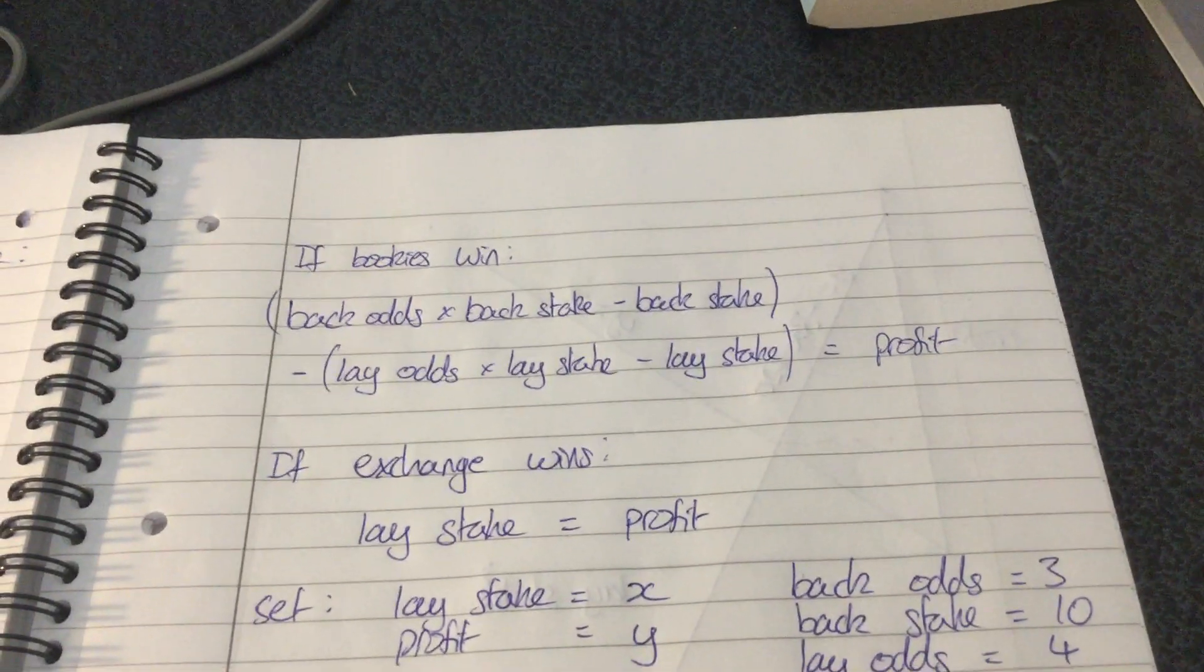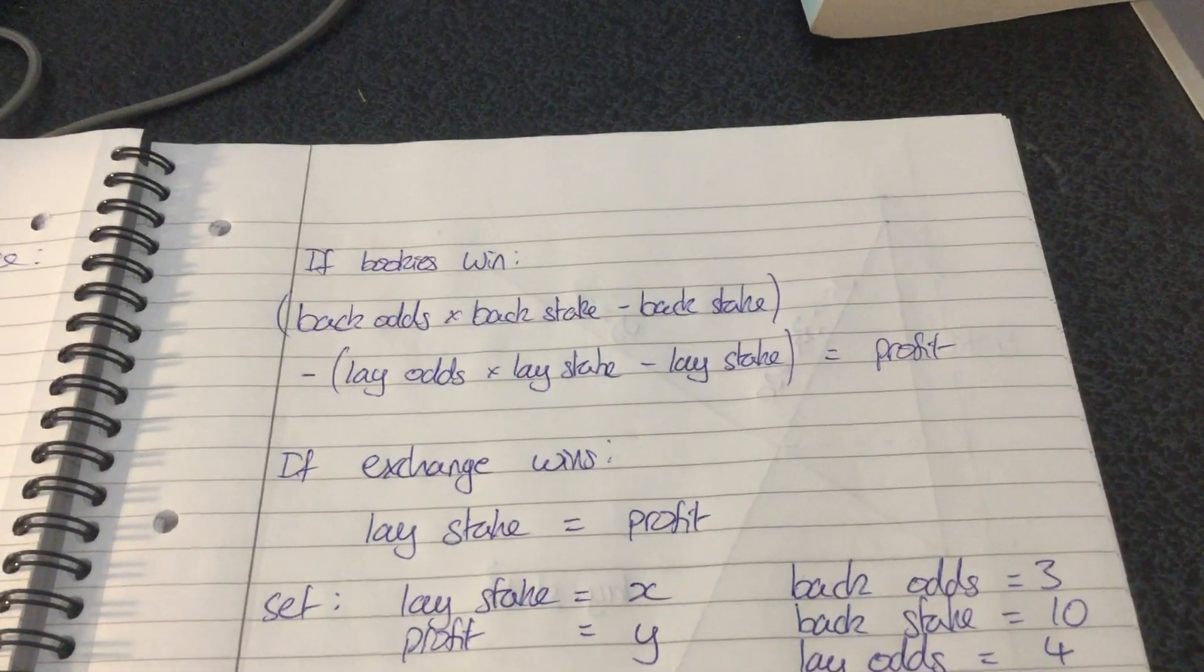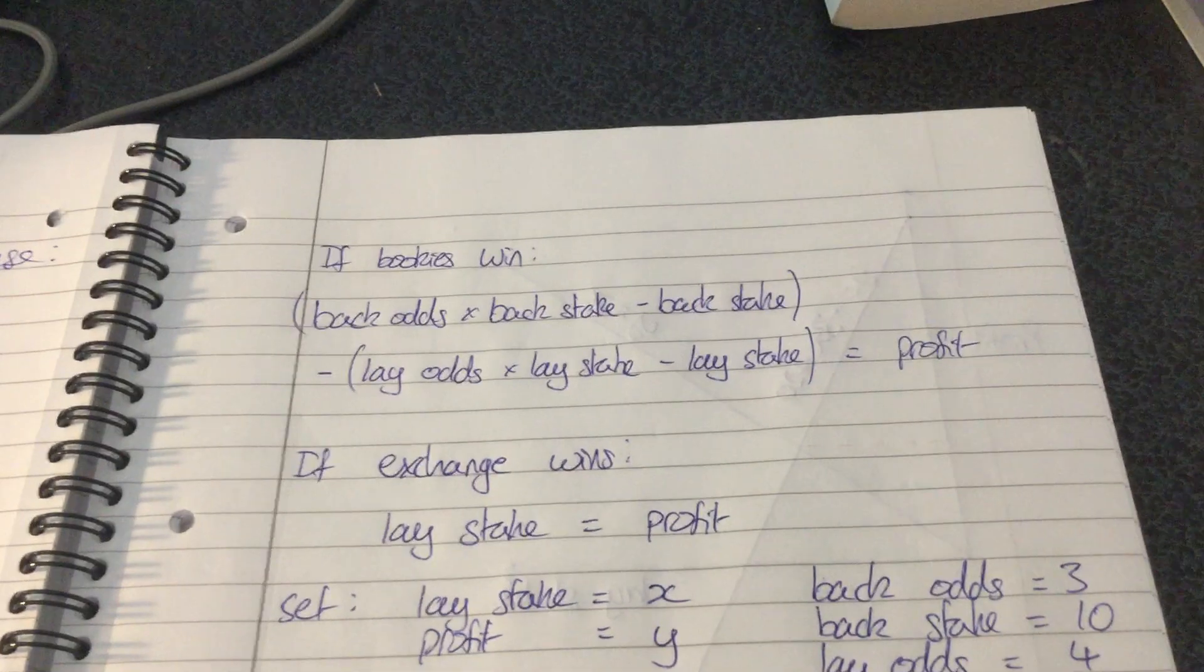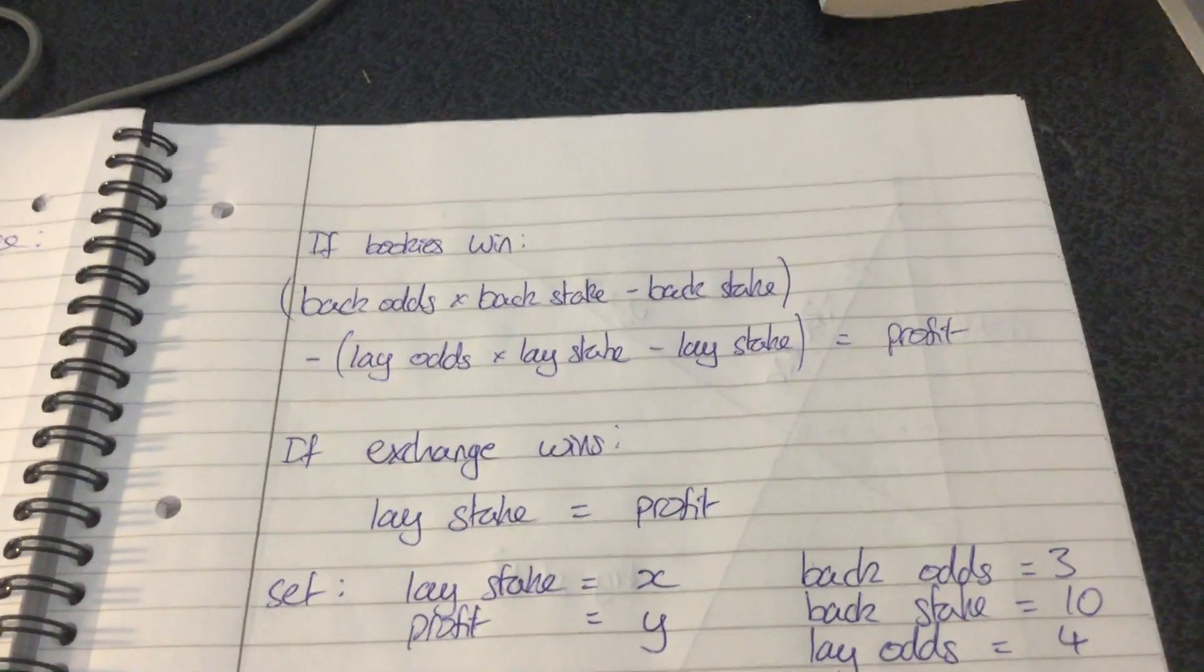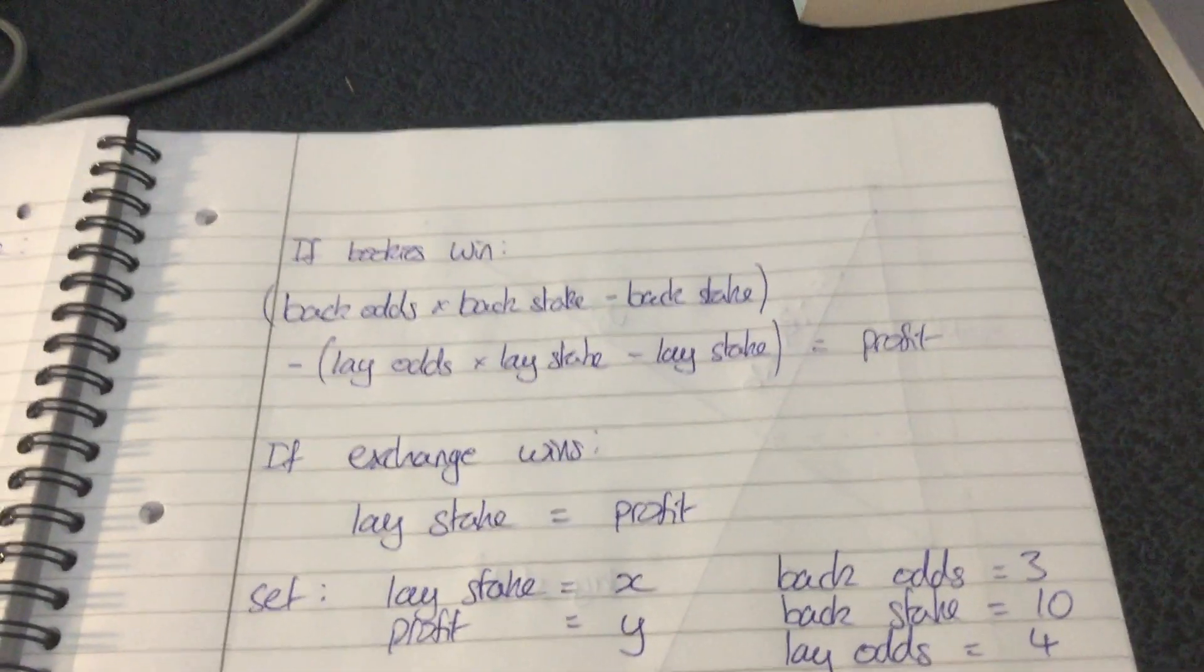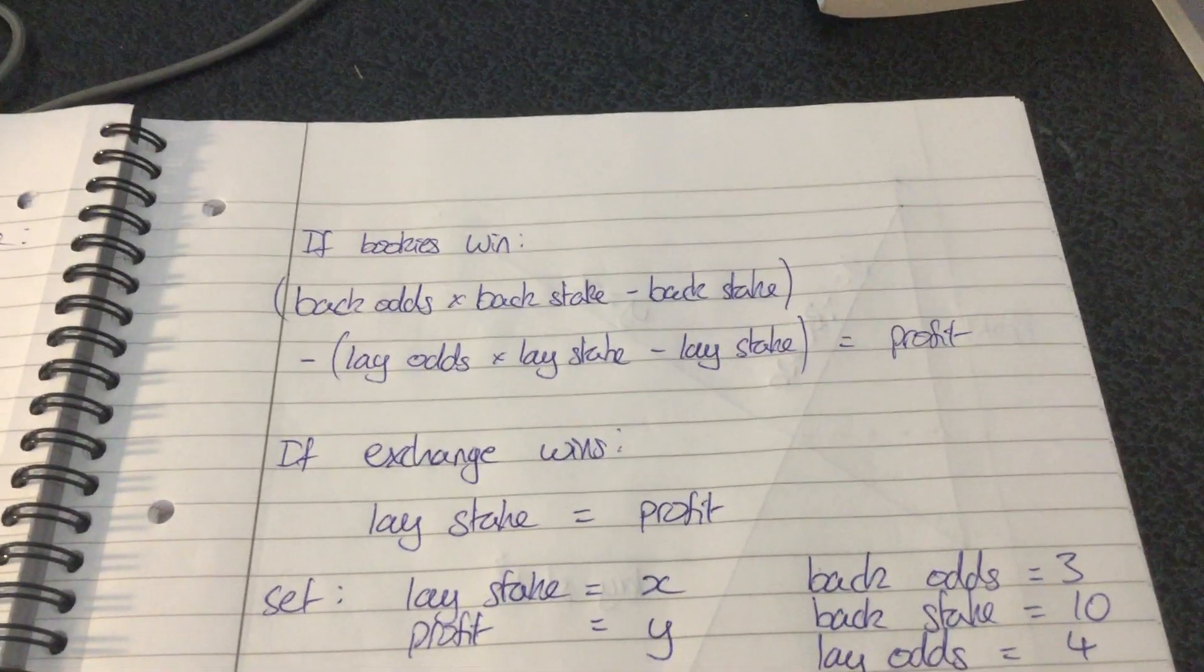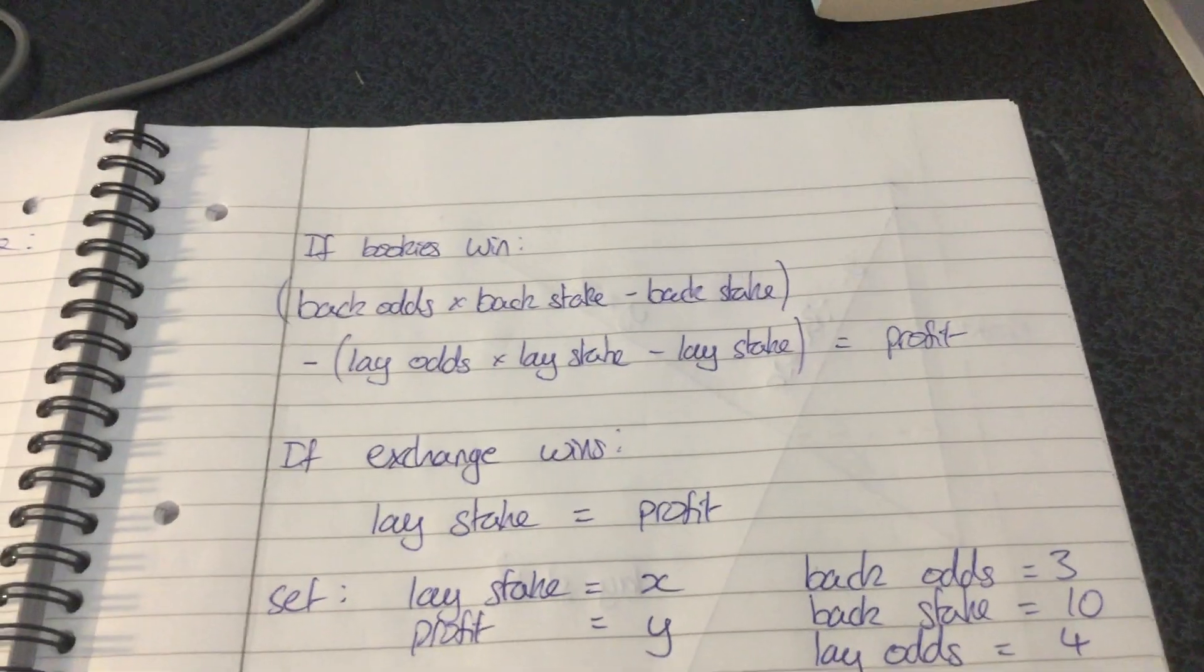When I started matched betting I was using Profit Accumulator, so they provide a calculator where you just type in the back stake and the back odds and the lay odds as well, and it will just tell you what lay stake to put in the exchange. But I was interested to know the actual maths behind it, so if you are as well then watch this.